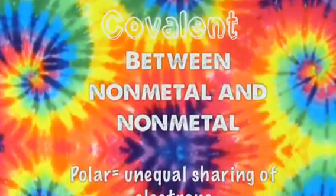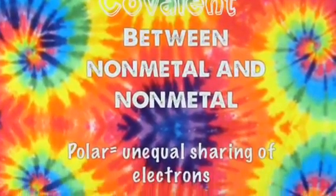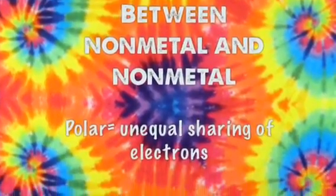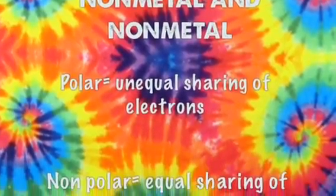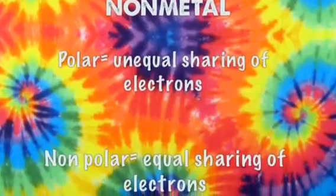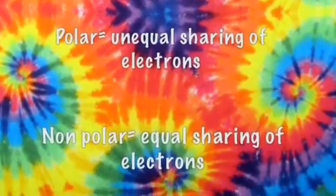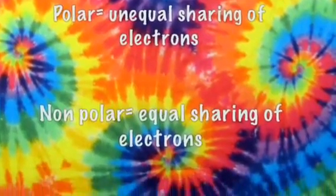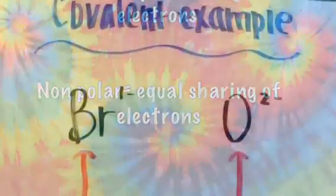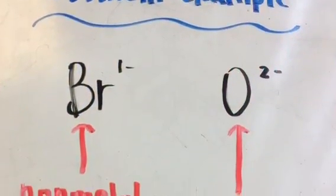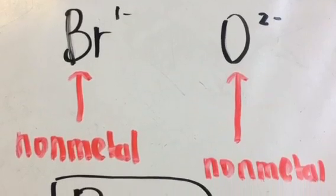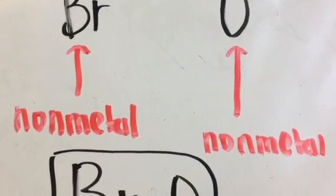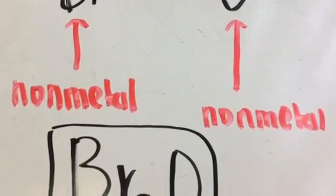Next is a covalent bond. It is between a nonmetal and a nonmetal. There are two types: polar and nonpolar. The first example is bromine and oxygen — they are both nonmetals.